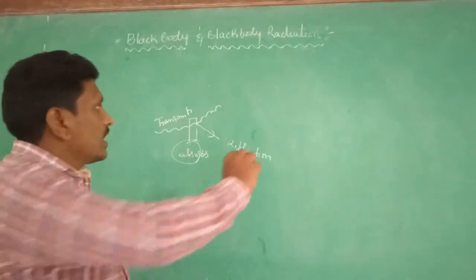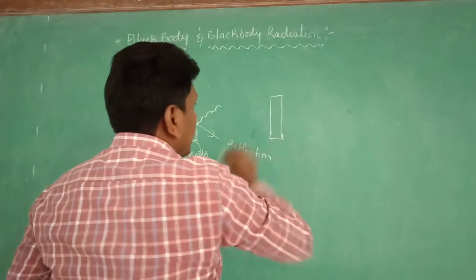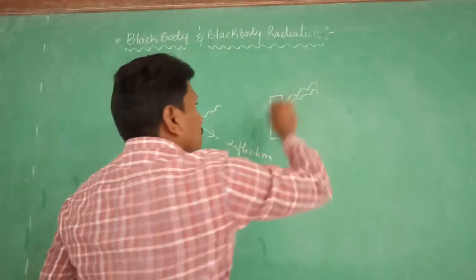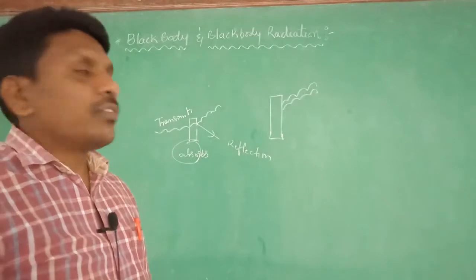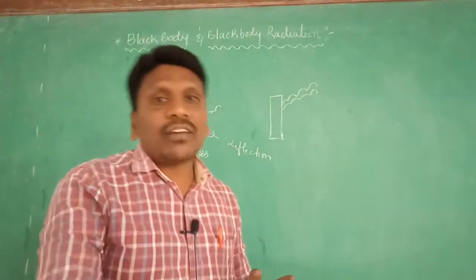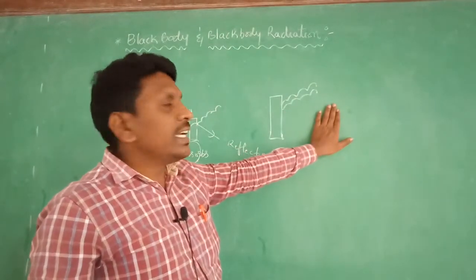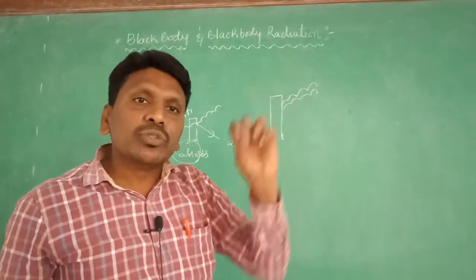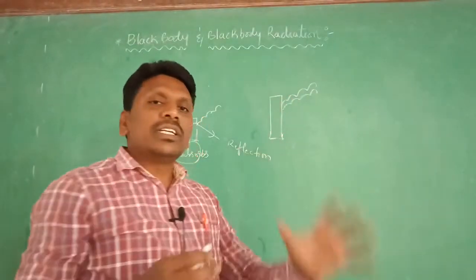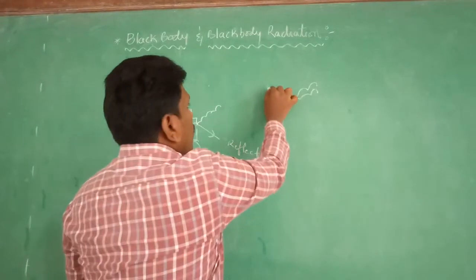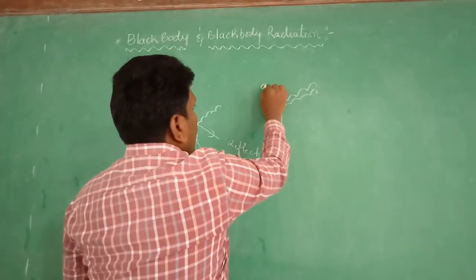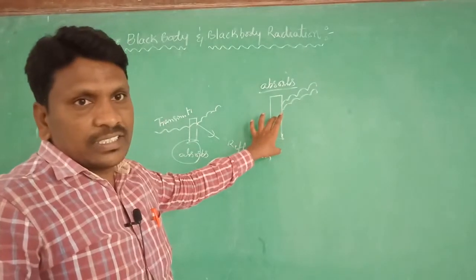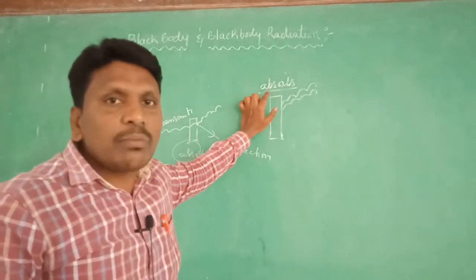Consider the black body. Whenever light is incident on the black body, this light is not a single wavelength — it is different amounts of light, different wavelengths of light. The black body absorbs a total 100% of the light — 100% of the energy is absorbed. So the black body is a perfect absorber.